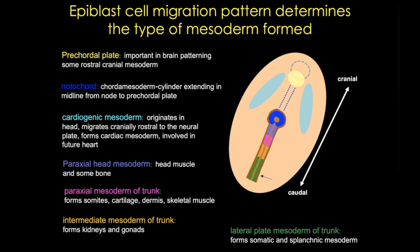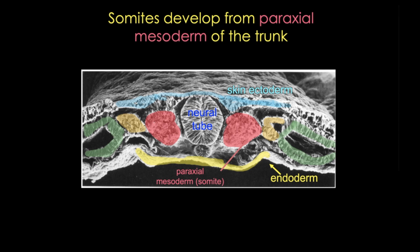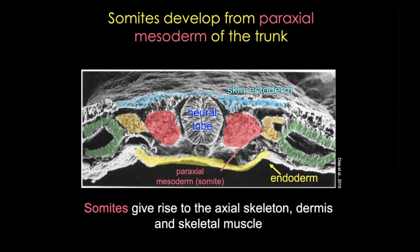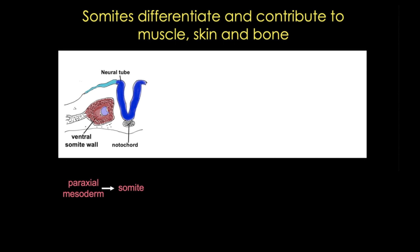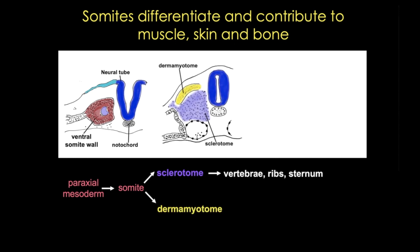An electron micrograph cross-section shows the relative positions of trunk mesoderm populations alongside ectoderm and endoderm. Just lateral to the neural tube is the paired paraxial mesoderm, which gives rise to somites — progenitors of the axial skeleton, dermis, and skeletal muscle. The paraxial mesoderm or somite divides into two populations: the sclerotome, giving rise to the axial mesoskeleton — vertebrae, ribs, and sternum — and the dermomyotome, which further subdivides into the dermatome (giving rise to dermis) and the myotome (giving rise to skeletal muscle).